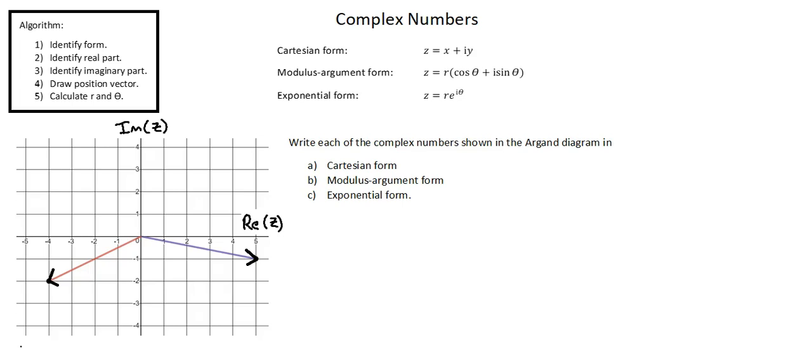Next, the modulus argument form of a complex number. z equals r times quantity, cosine theta plus i sine theta. Some notations here.